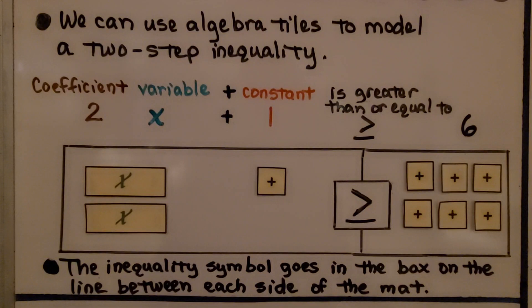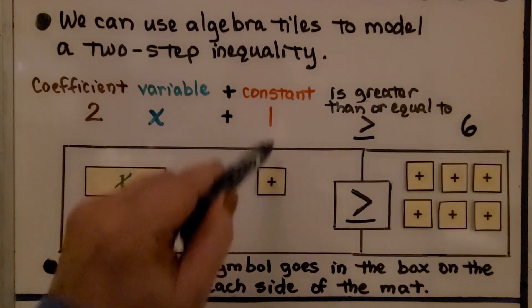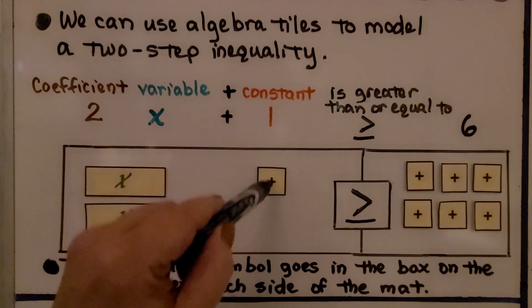So we have 2x plus 1 is greater than or equal to 6. To model it, we have two x tiles because we have 2x. We have a plus square for the constant 1, adding that 1.